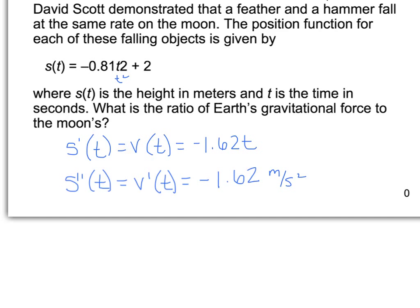So now that we know that the moon's gravitational force is negative 1.62, and I know that the Earth's gravitational force, let's see, Earth, we'll write over here, is negative 9.8 meters per second squared.